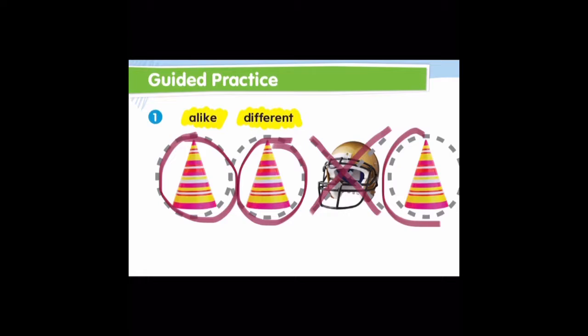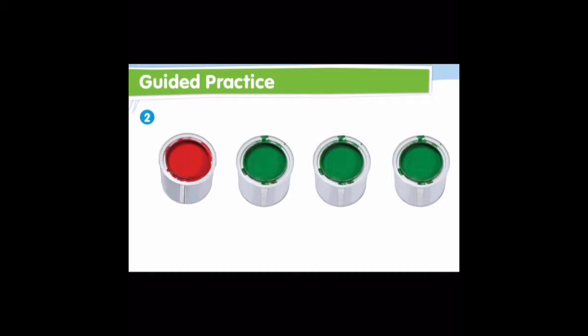Can you take a look at this row and tell me which one of these items is different than the others? Good job — this one here is different, so we're going to put an X. What makes it different? It is a different color. Good job. And these three are alike — they are the same color, so let's circle them.